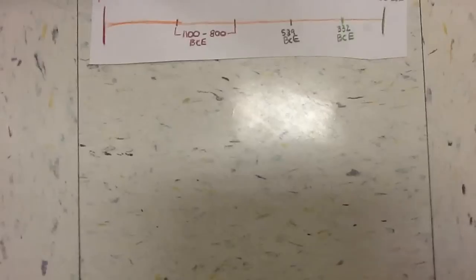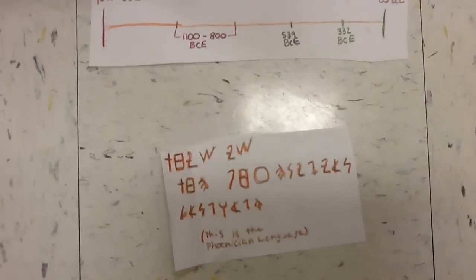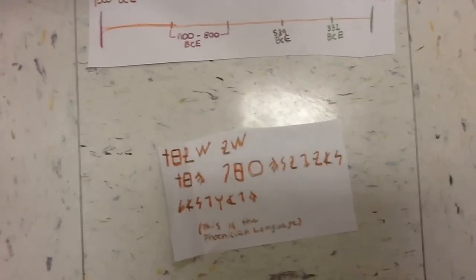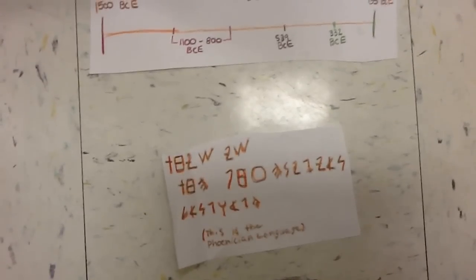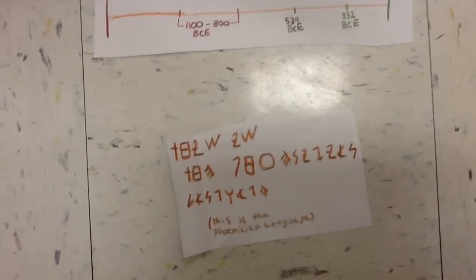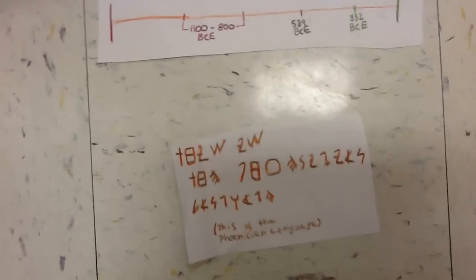To keep up with their thriving trading market, with themselves and other countries, they created a writing system that contained 22 symbols. Their writing system was later used in a lot of languages, including the famous Greek.